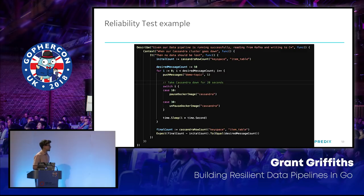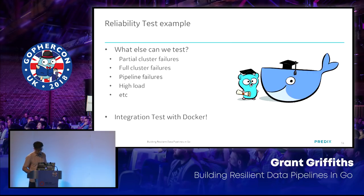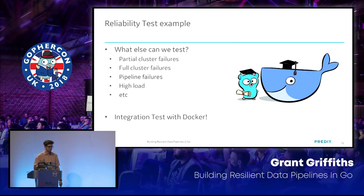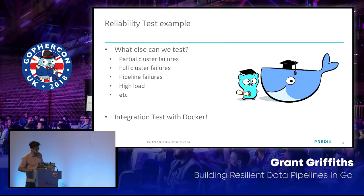You could use this approach for any of your systems to integration test and make sure it behaves the way you want during failures. That was just one example — you could also test partial cluster failures, full cluster failures, bringing down the entire Cassandra cluster, bringing down your pipeline, or high load testing. That's why I'd recommend integration testing with Docker, at least through CI or daily, to make sure your system behaves correctly with external dependencies.